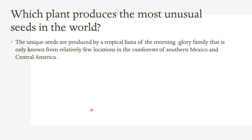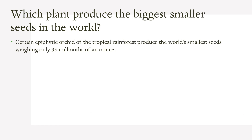Which plant produces the most unusual seeds in the world? The unique seeds are produced by a tropical liana of the morning glory family, known only from relatively few locations in the rainforests of southern Mexico and Central America. Certain epiphytic orchids of the tropical rainforest produce the world's smallest seeds, weighing only 35 millionths of an ounce.